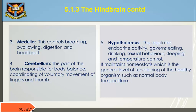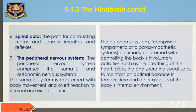4. Cerebellum: responsible for body balance and coordinating voluntary movement of fingers and thumb. 5. Hypothalamus: regulates endocrine activity, governs eating, drinking, sexual behavior, sleeping, and temperature control. It also maintains homeostasis — the general level of functioning of the healthy organism such as normal body temperature. 6. Spinal Cord: the path for conducting motor and sensory impulses and reflexes.